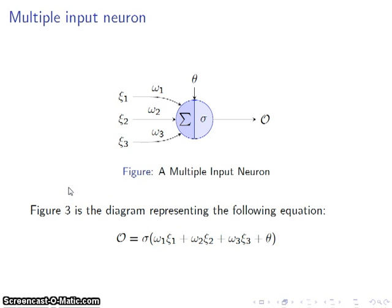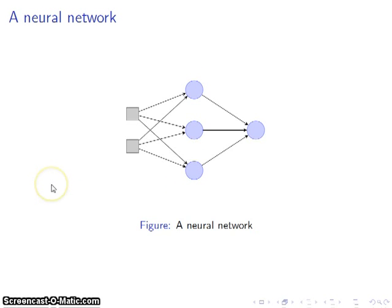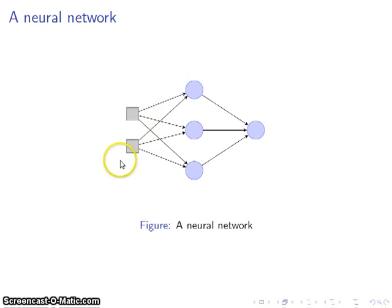Now to make a network, we're going to put a lot of these neurons together in parallel and form a layer. And we're going to put multiple layers together to form a network. This is an example of a neural network, fully connected — and we will treat them all as fully connected. In this case, this has one input layer, one hidden layer, and one output layer.